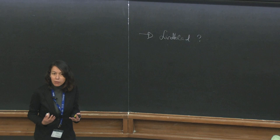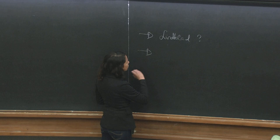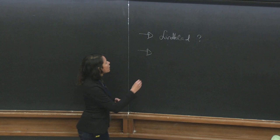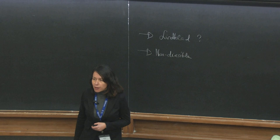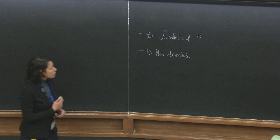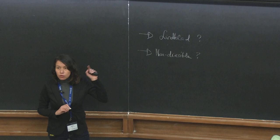These measures are mostly divided into two main groups. One is that in which people consider non-Markovian those dynamics that cannot be described with a divisible map. This was first proposed by Rivas, Huelga, and Plenio.